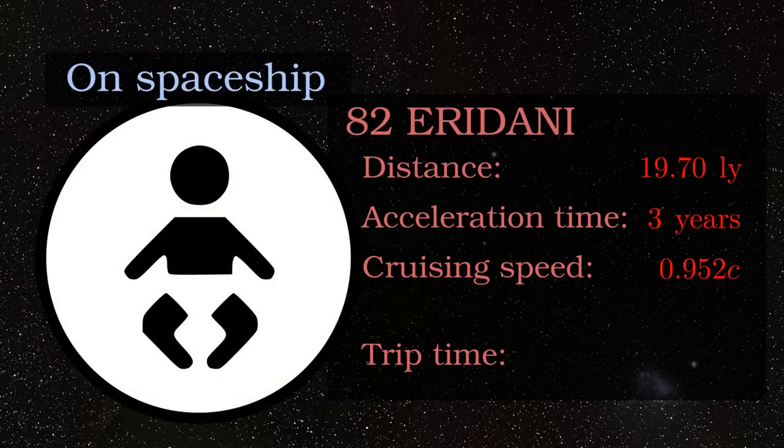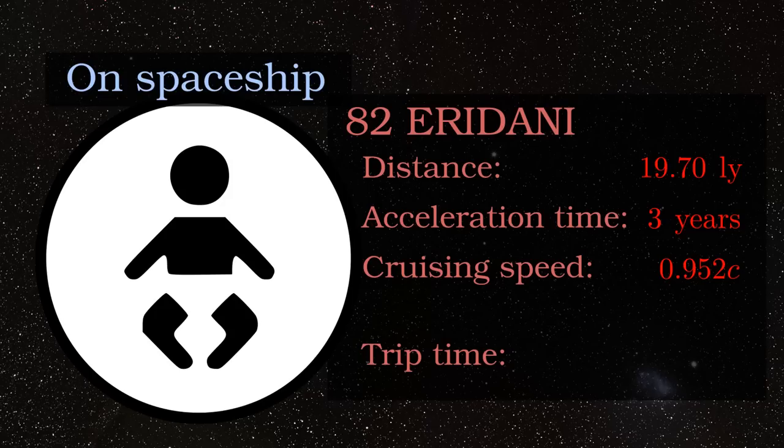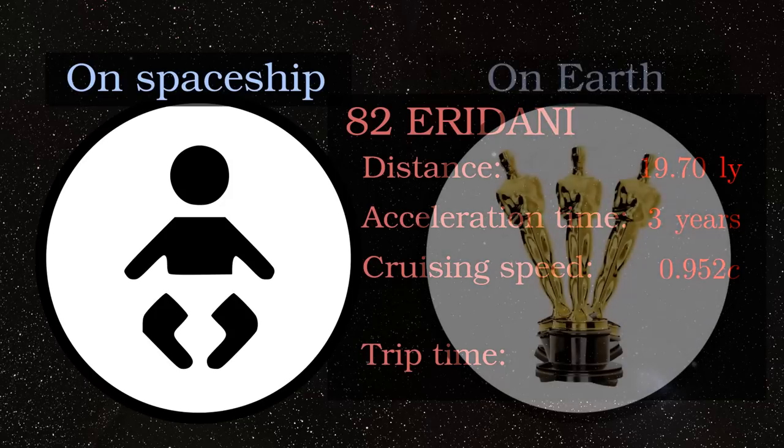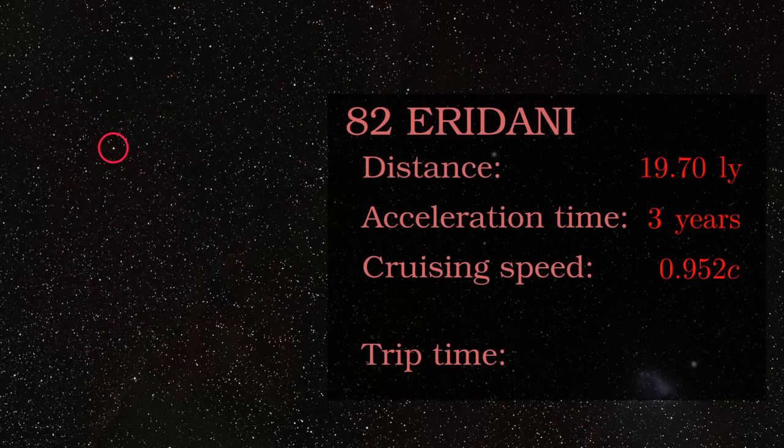In other words, suppose the astronauts decided to have a baby during the trip. This obviously takes 9 months from their point of view, but during the same period people on Earth would have held 3 annual Oscars ceremonies, which might actually be a downside for the poor kid.